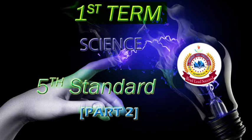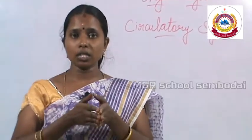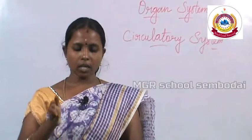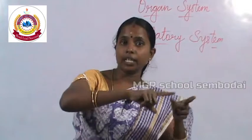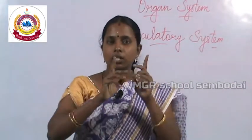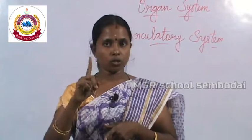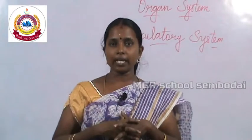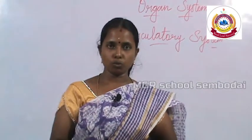Next, blood vessels. Blood vessels consist of arteries, veins, and capillaries. Arteries carry oxygenated blood and veins carry deoxygenated blood. The capillaries connect the arteries and the veins. They help in the exchange of gases between the blood and body tissue.